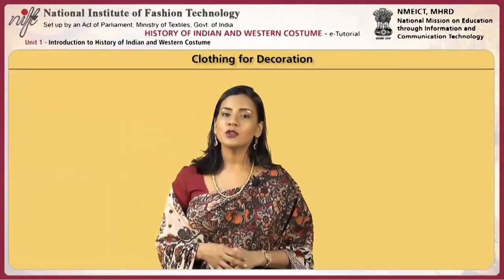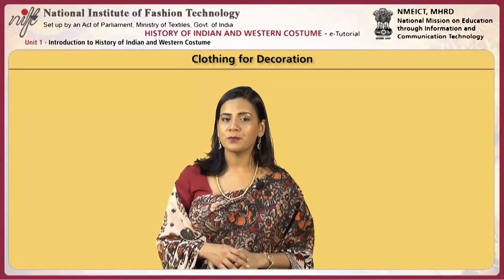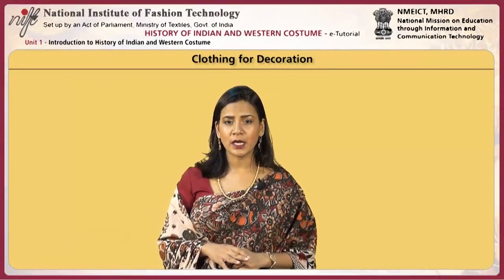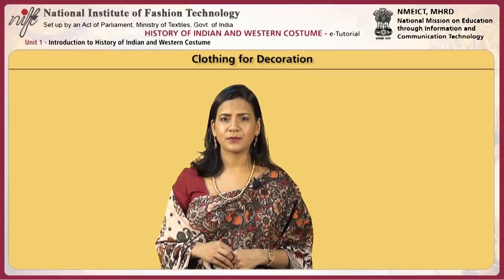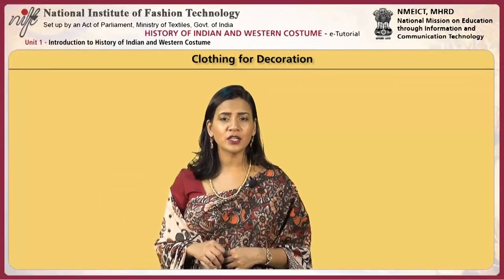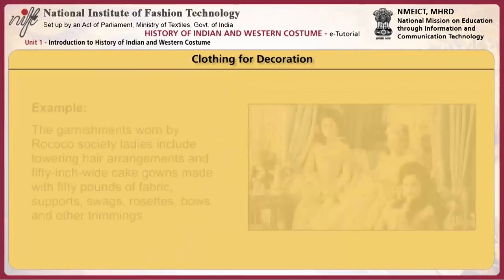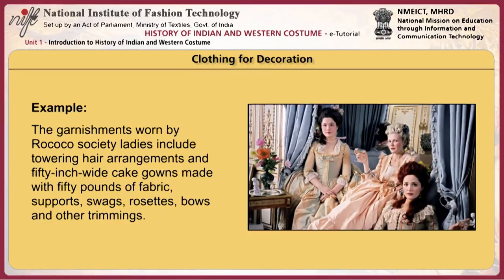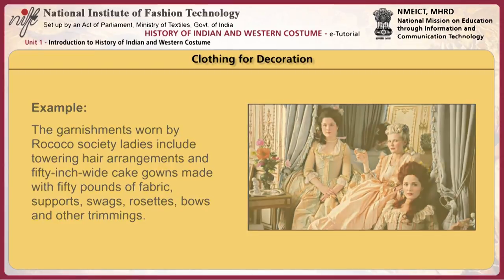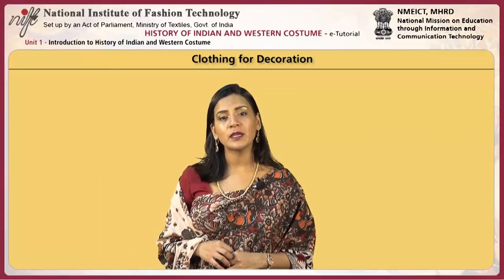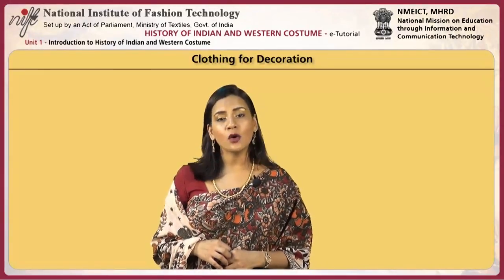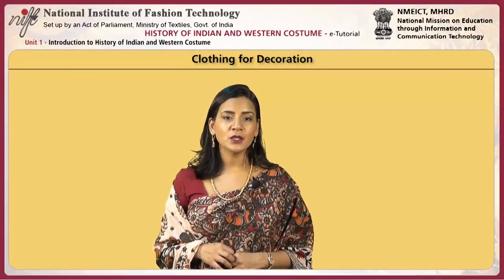Clothing for decoration is thought to be the primary reason for the development of human costume. Even when we look at primitive cultures in existence today where clothing is not worn, there is no culture in which some form of body decoration does not exist. This awareness of self and interest in body decoration is believed to be a basic human trait. For example, the garments worn by Rococo society ladies included towering hair arrangements and 50-inch wide cake gowns, made with 50 pounds of fabric, supports, swags, rosettes, bows and other trimmings. Similarly, the Japanese counterpart of French noblewomen decorated themselves in 12 layers of kimono with enormous sleeves and trains that, along with accessories and makeup, symbolized types of flowers or seasonal foliage.